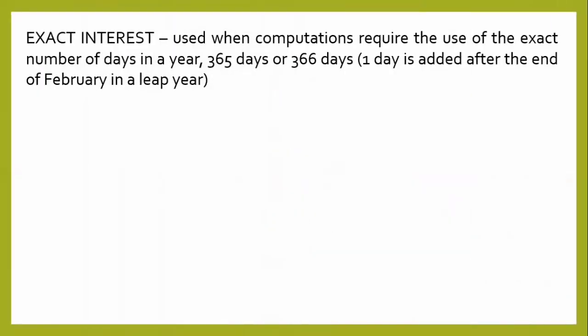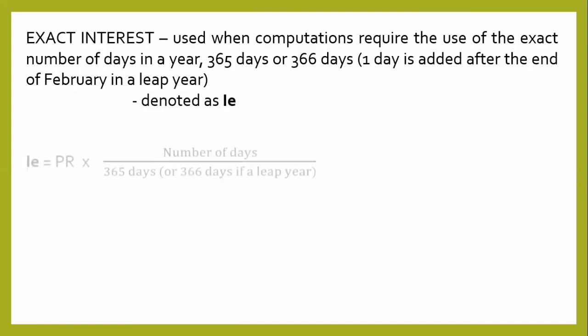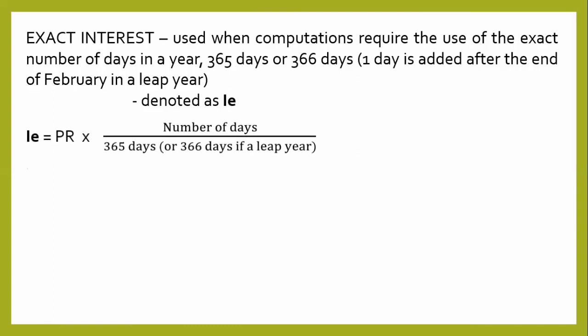When we say exact interest, it is used when computations require the use of the exact number of days in a year — 365 days, or 366 days if the given year is a leap year, where one day is added after the end of February. Exact interest is denoted as IE. The formula is: IE is equal to the principal times the rate times the given number of days, over 365 days — or 366 days if the given year is a leap year.